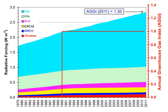Emissions limitations specified in the Kyoto Protocol expired in 2012. The Cancun Agreement, agreed on in 2010, includes voluntary pledges made by 76 countries to control emissions. At the time of the agreement, these 76 countries were collectively responsible for 85% of annual global emissions. CFCs are regulated by the Montreal Protocol, which was motivated by CFCs' contribution to ozone depletion rather than by their contribution to global warming.